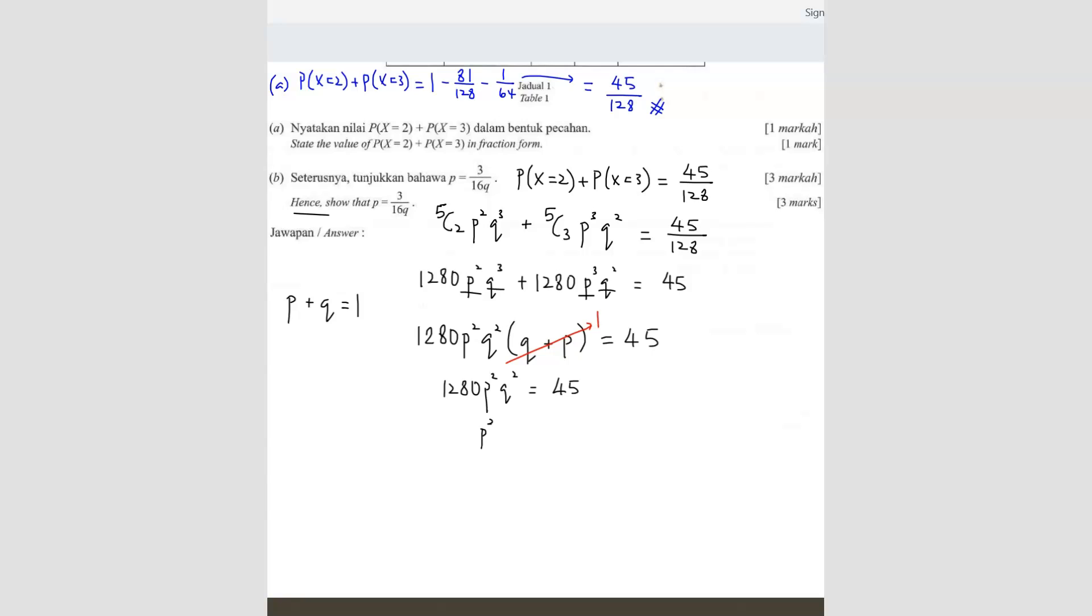So we're going to shift this. So P square equals to 45 over 1280 Q square. So P is equals to, you're going to square root. So 45 over 1280 is actually 9 over 256, Q square. So your answer is P equals to 3 over, 256 is 16, right, 16 square, Q. So this should be your answer.